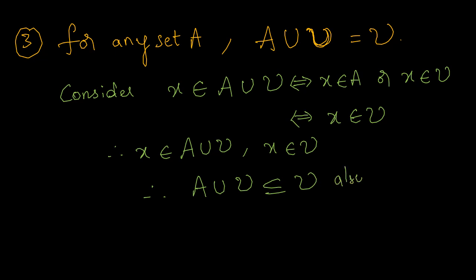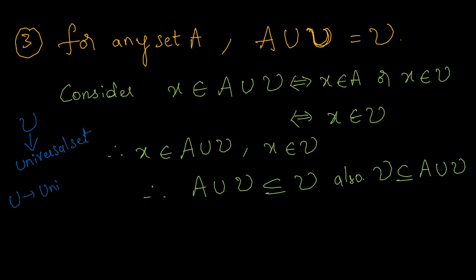Using the if-and-only-if statement, we can also say U is a subset of A union U. Note: the universal set is represented with a different symbol here to avoid confusion with the union symbol — this is just the notation being used. Since each set is a subset of the other, we conclude A union U equals U. Hence proved.